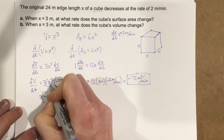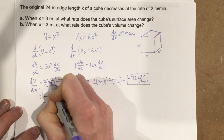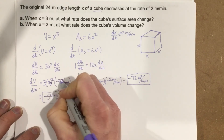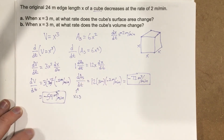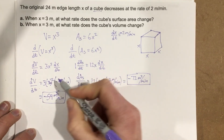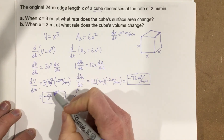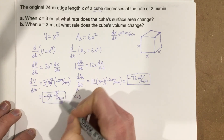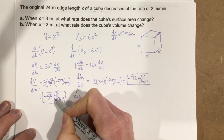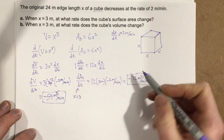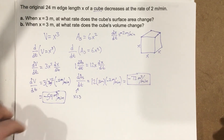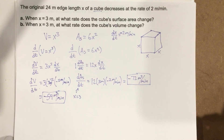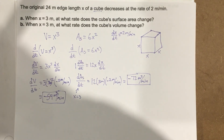So the units are meters squared for surface area and meters cubed for volume. The cube is reducing its volume by 54 meters cubed per minute and reducing its surface area by 72 meters squared per minute.